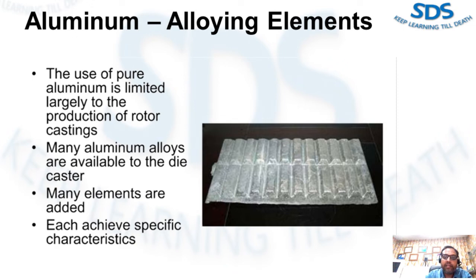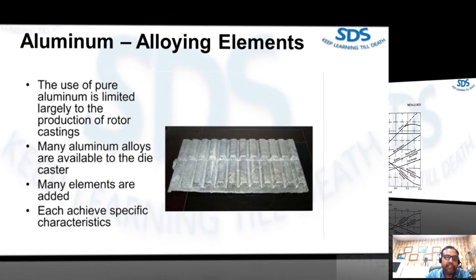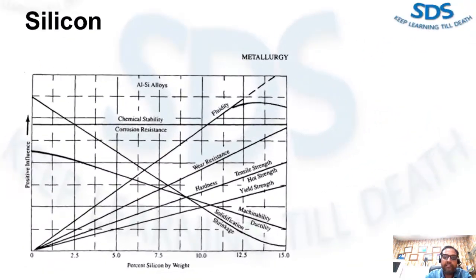Many aluminum alloys are available to the die caster. The major ones used today are 380, 383, and 413. Silicon is the principal alloying element used with aluminum. Silicon increases fluidity and provides freedom from hot shortness. It is the single most important element relative to the castability of aluminum die casting alloys such as 380 and 394.